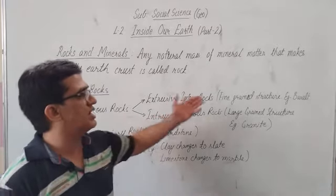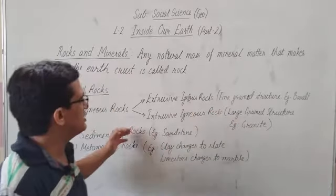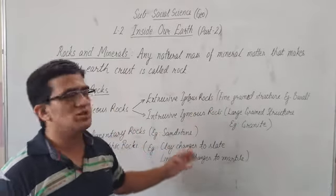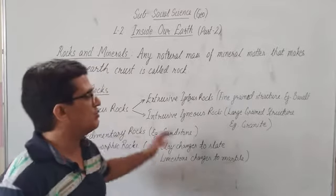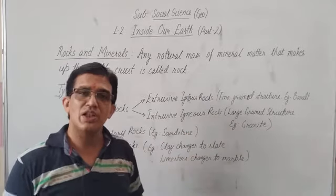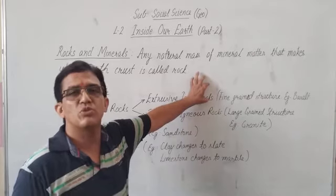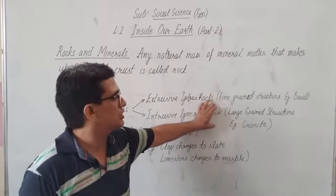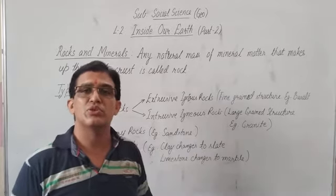Second is intrusive igneous rocks. This means when large grains solidify inside the earth, it becomes intrusive igneous rocks. In both ways, small grains form and large grains form. The large grains example is granite. Granite is very solid and used in many ways.